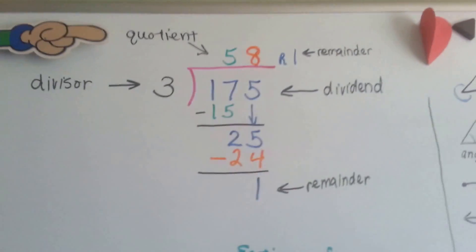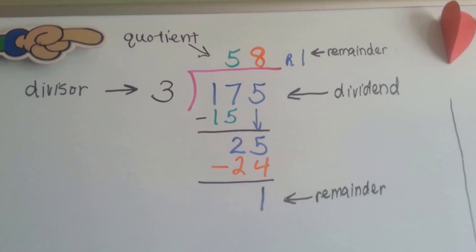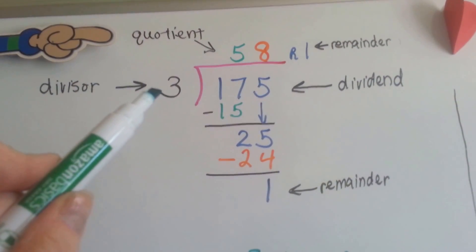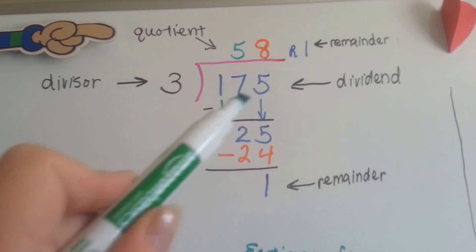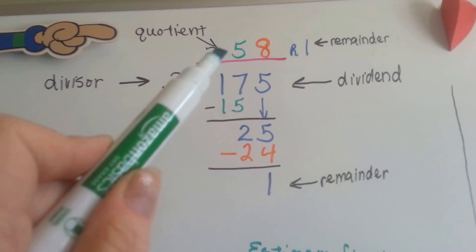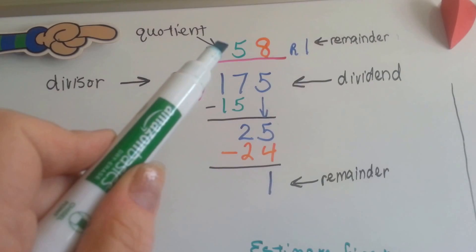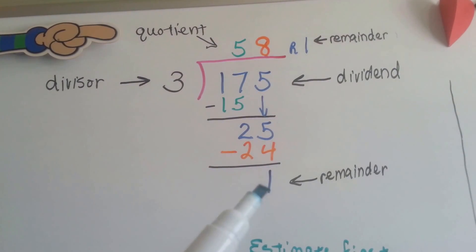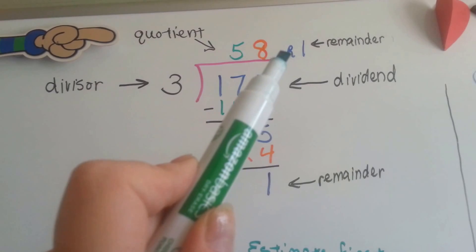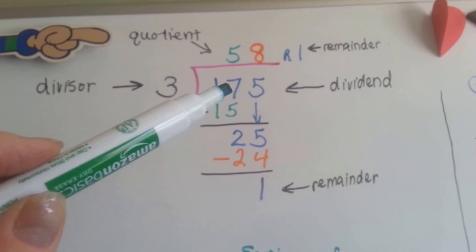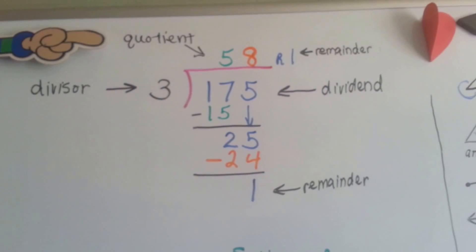I'm going to do a quick little review for you. This is a long division problem. You can see this little number on the outside here is the divisor. This is the dividend, the one that it's going into, and the quotient — the answer — is written up here. Any numbers that are left over at the bottom, the remainders, go off to the side of the quotient. Divisor, dividend, quotient.